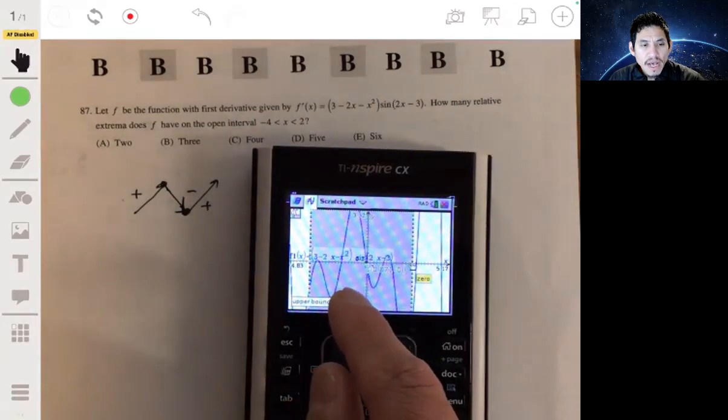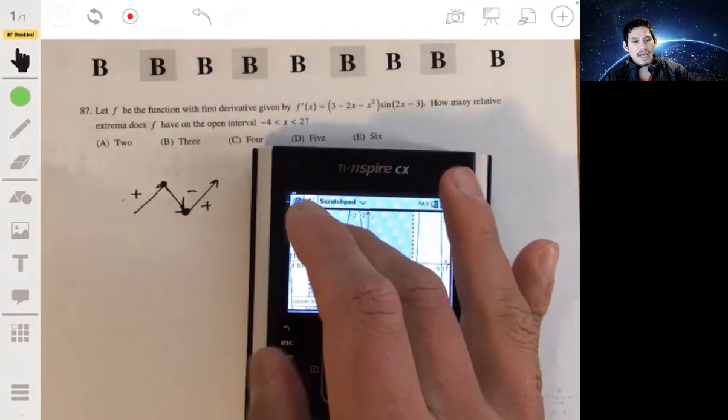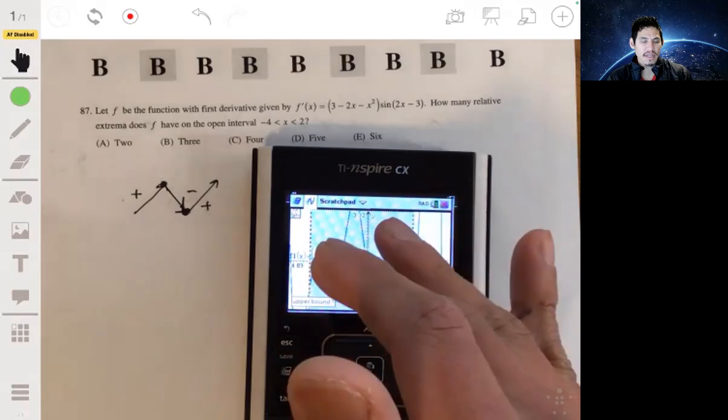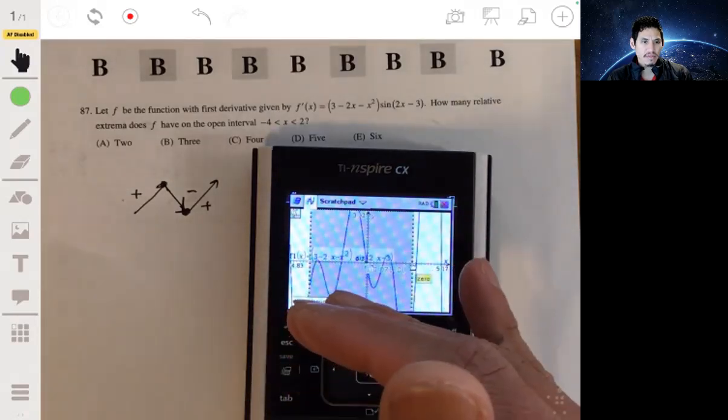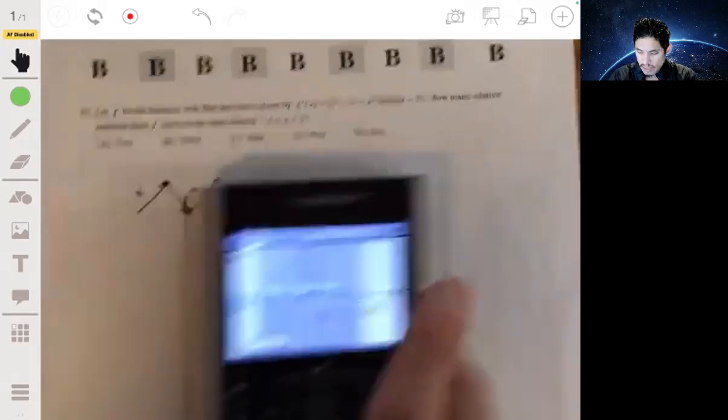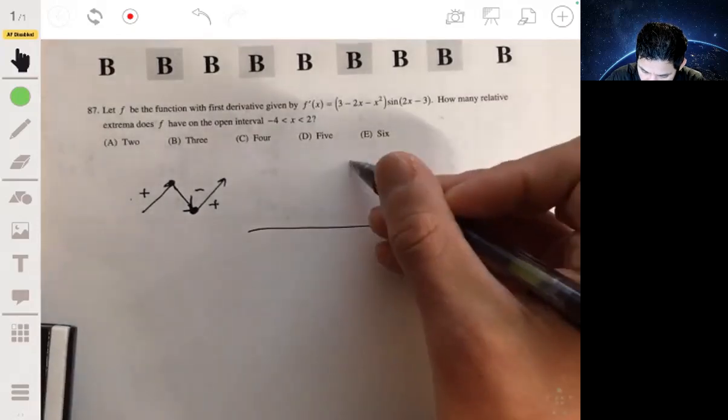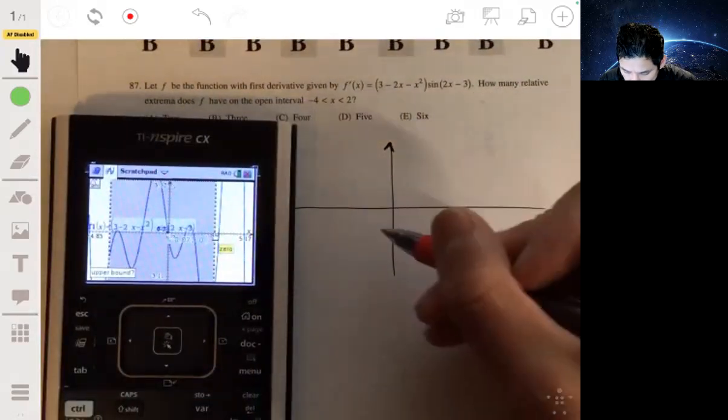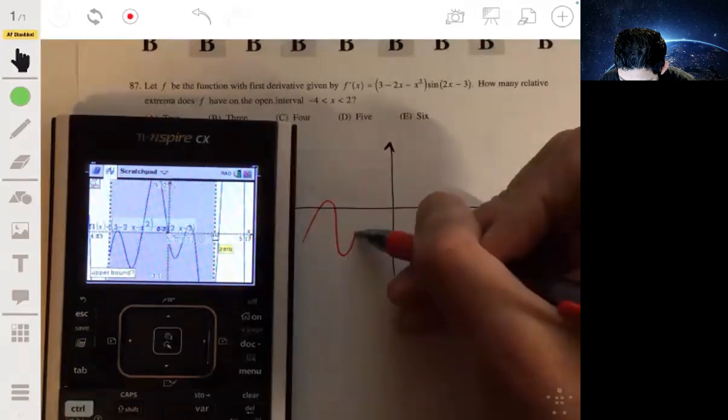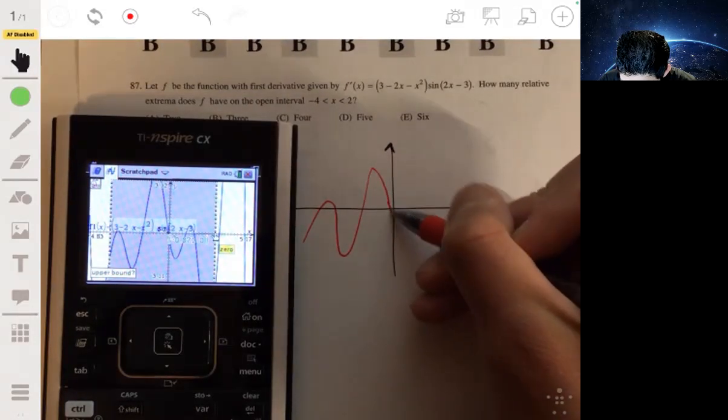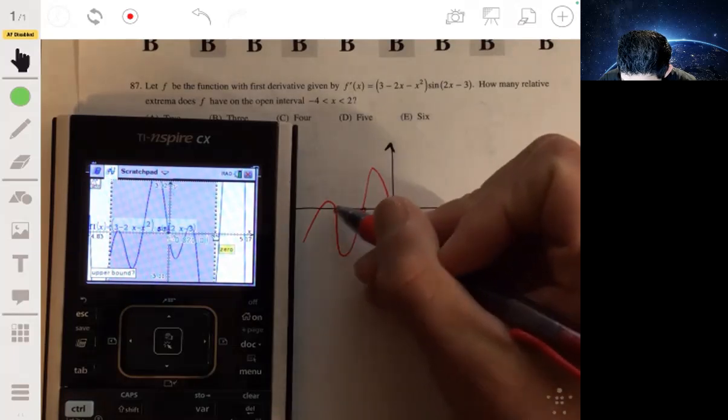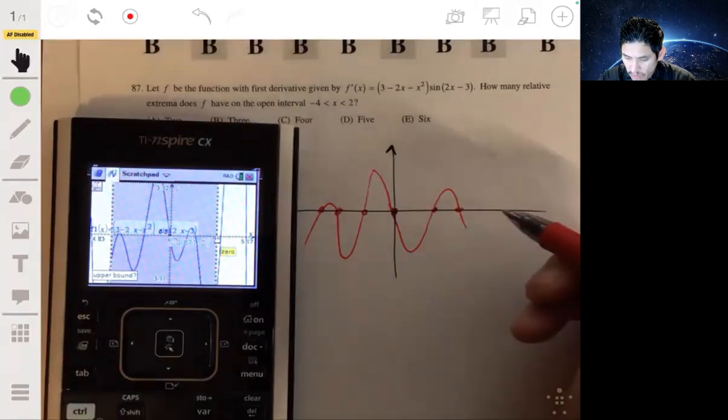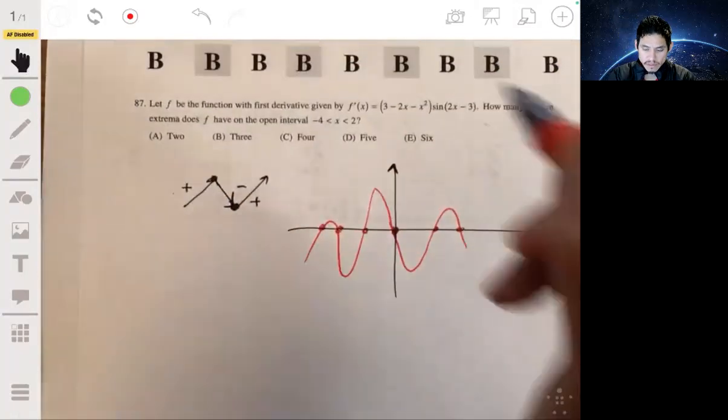And again, those zeros matter if the graph goes from being above the x-axis to being below or vice versa. If it had a zero but it stayed on the same side, it wouldn't count as an extrema. But all these cross. If I want to draw a sketch of this, we got something looking like this. Origin there, one, two, three, four, five, six. So from negative 4 to 2, and the answer is e.